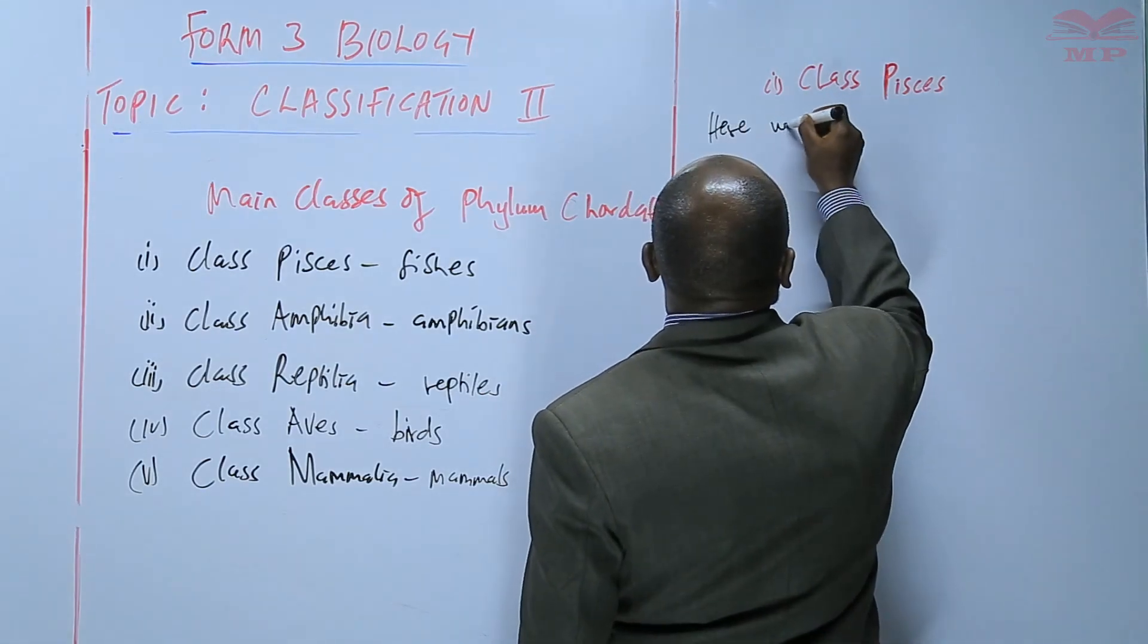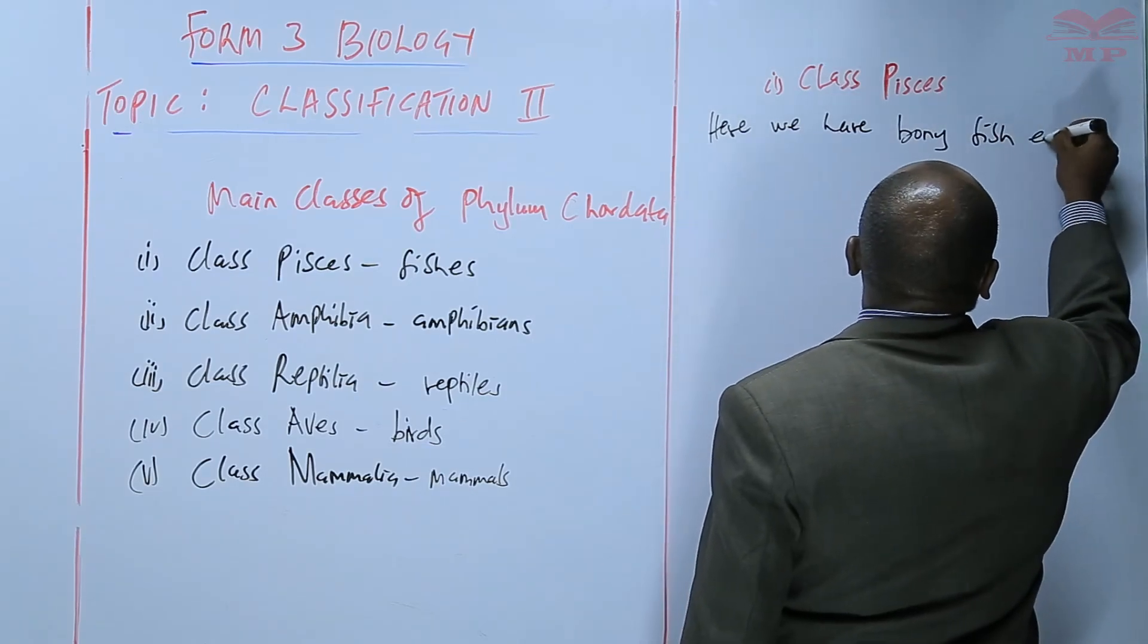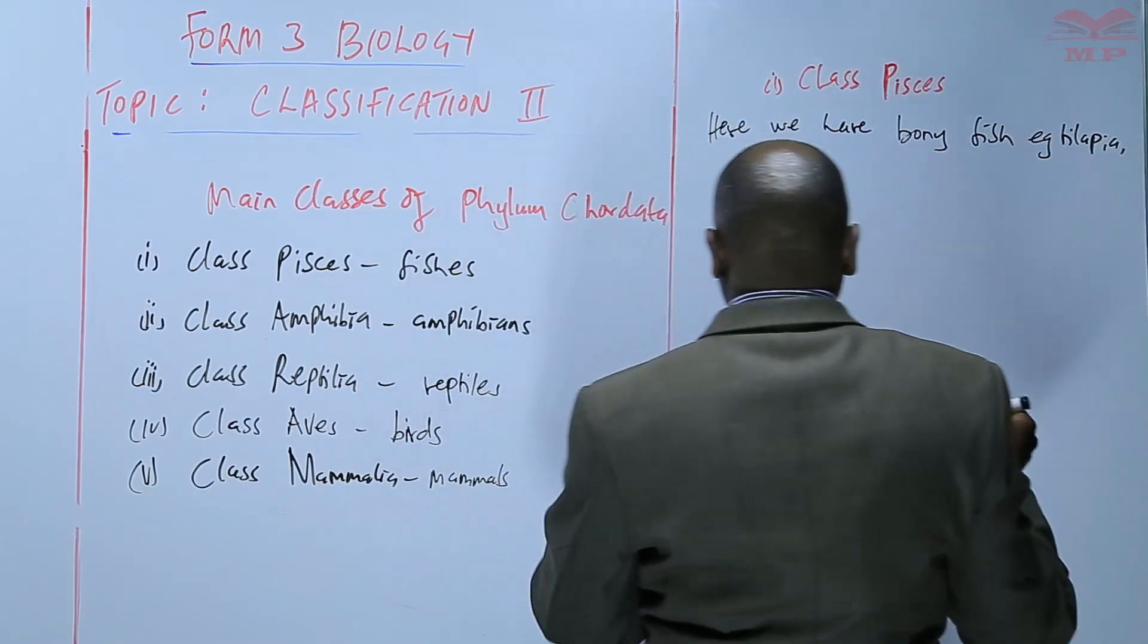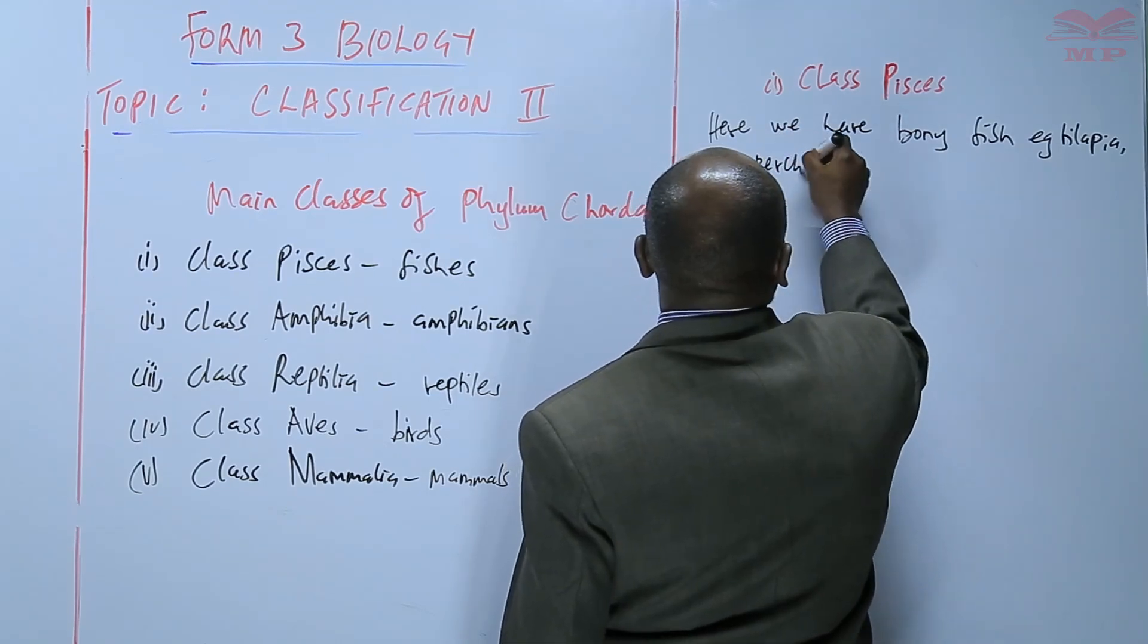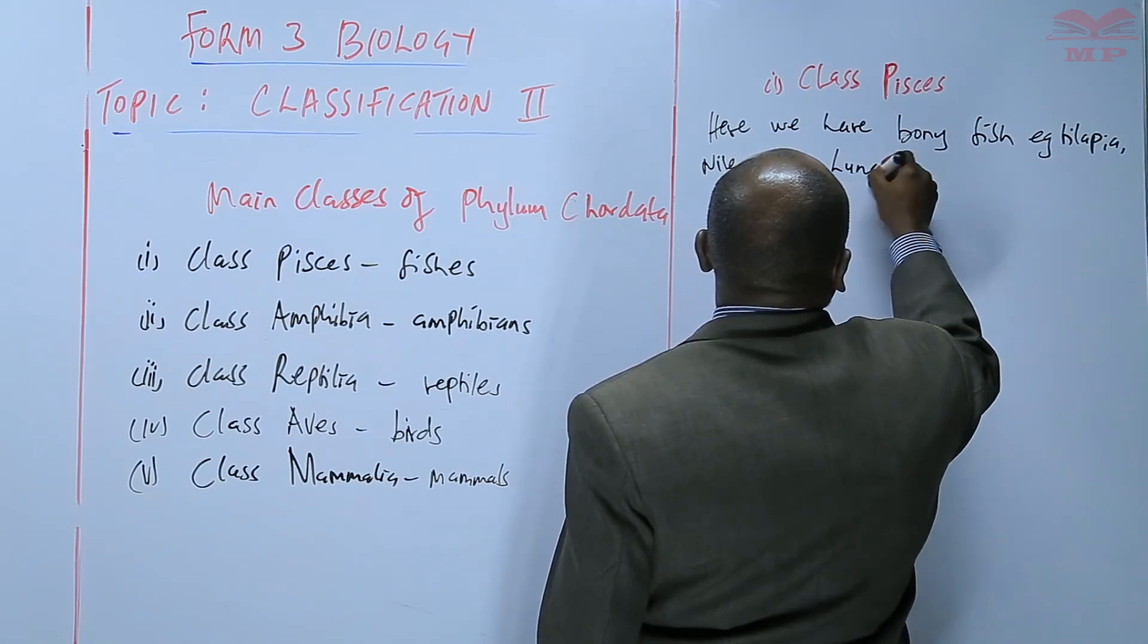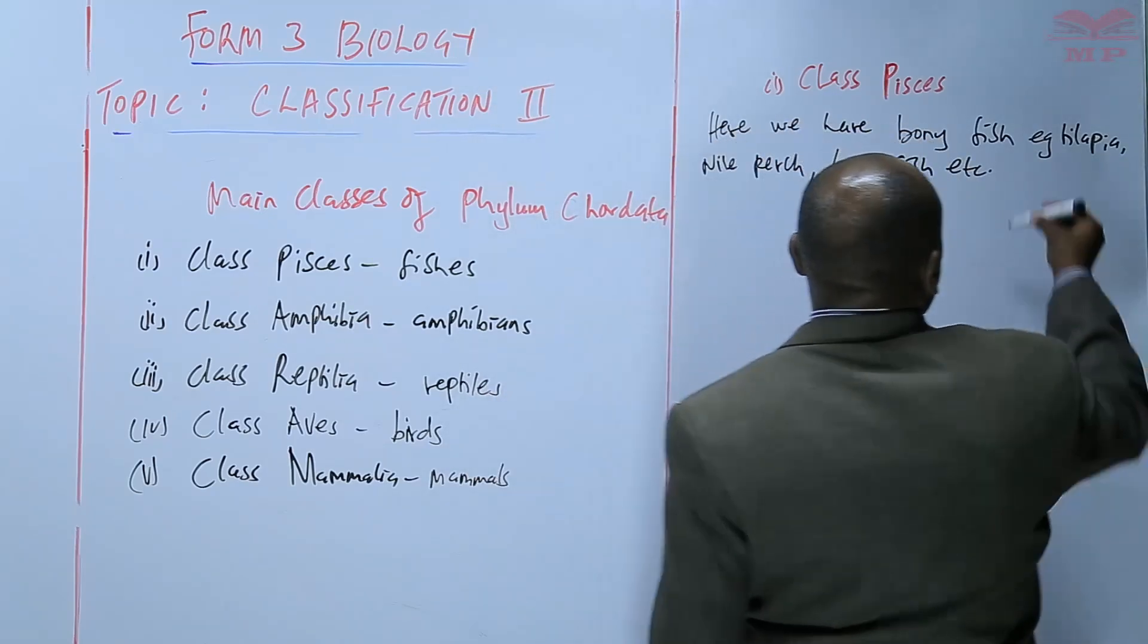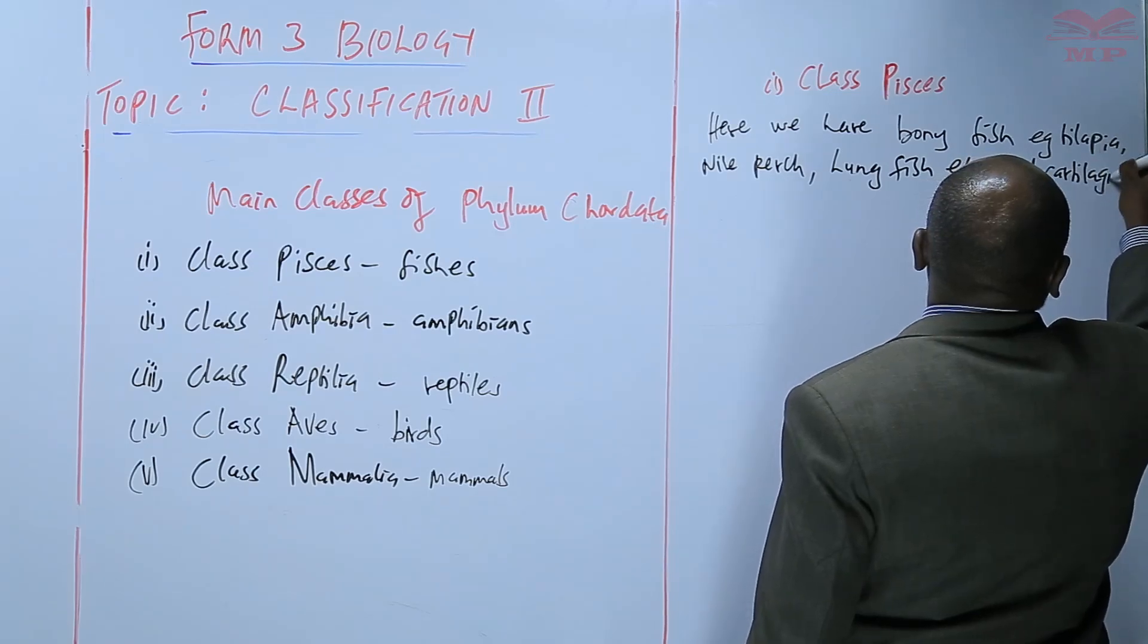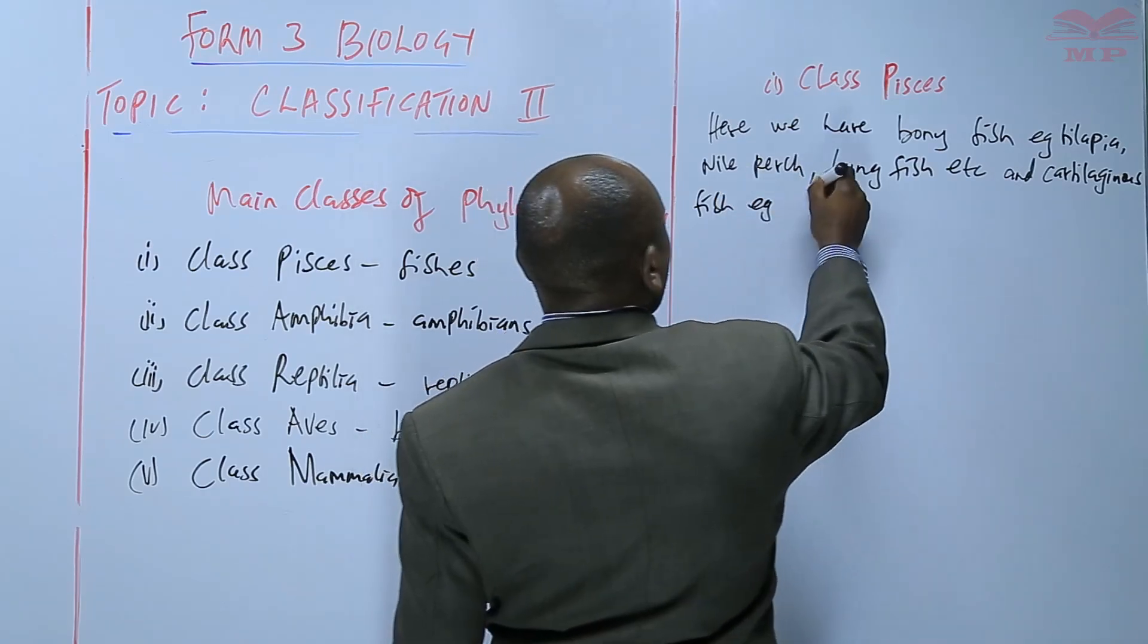We are saying that here we have bony fish, e.g. Tilapia, Nile perch, lungfish, etc., and cartilaginous fish, e.g. the shark.